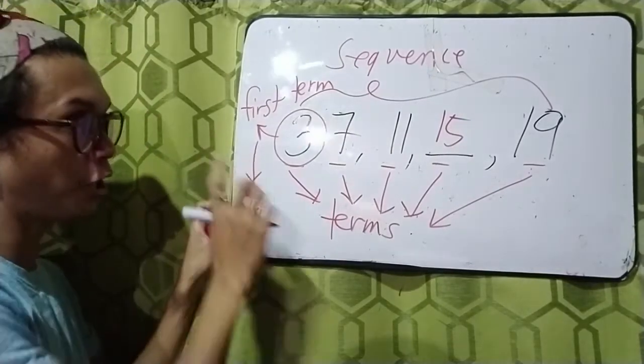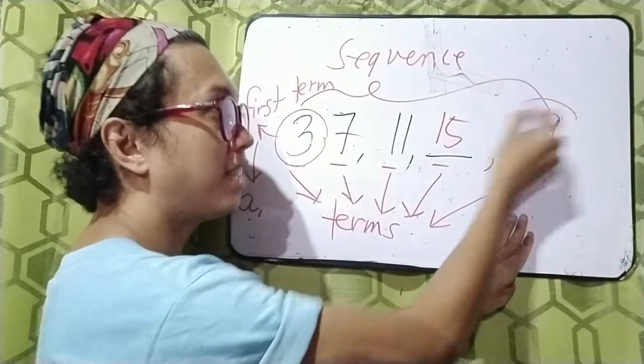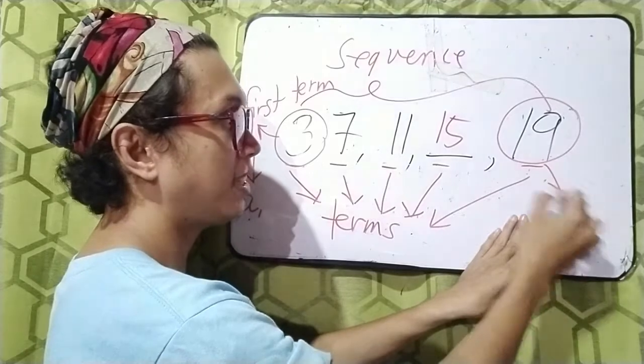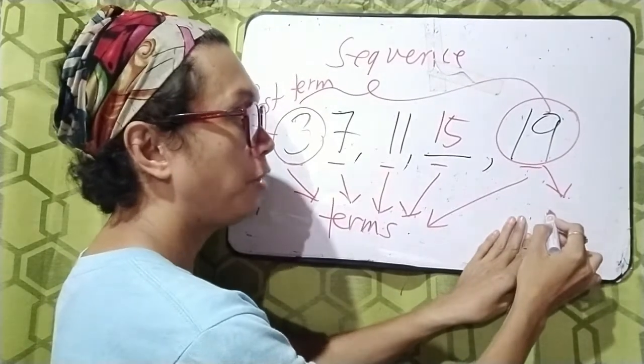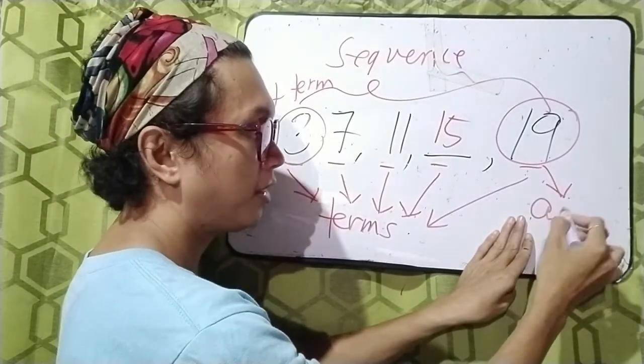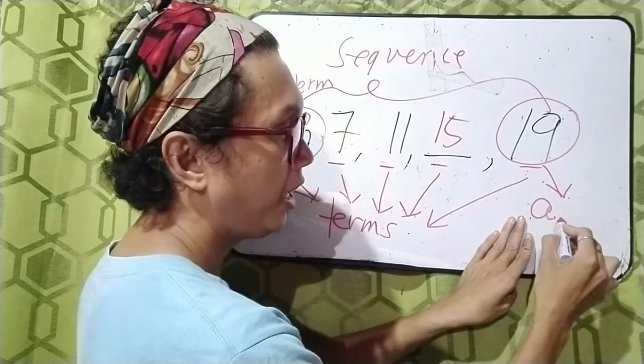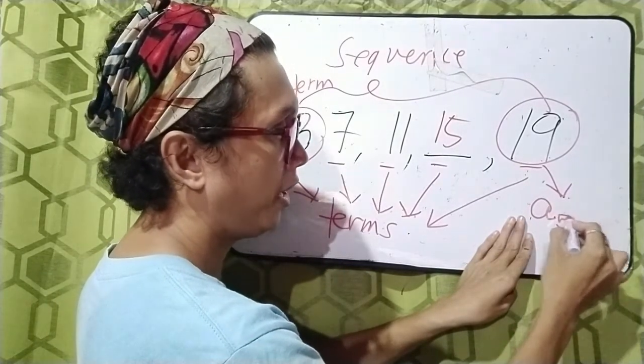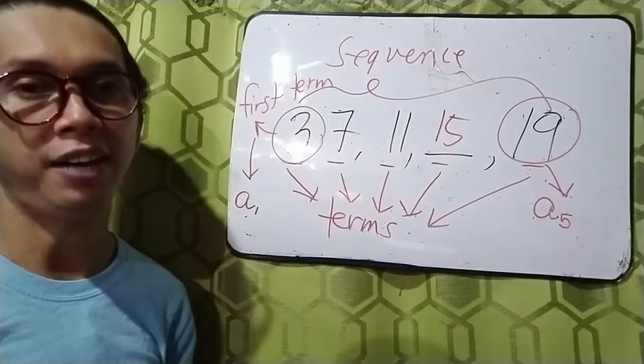And for this instance, 19, since this is the fifth term, we will be denoting it as A5, A sub 5.